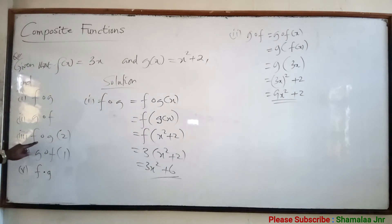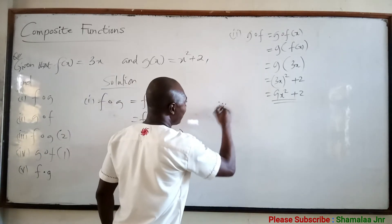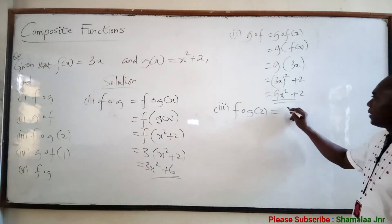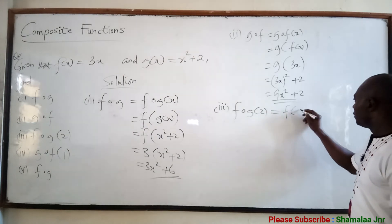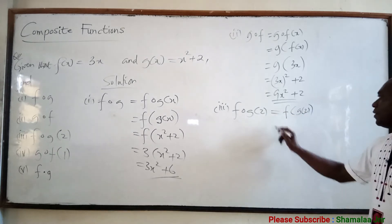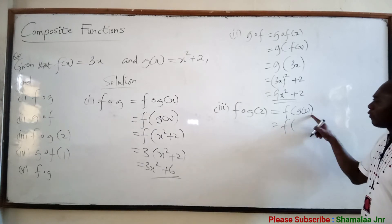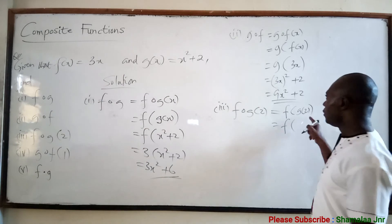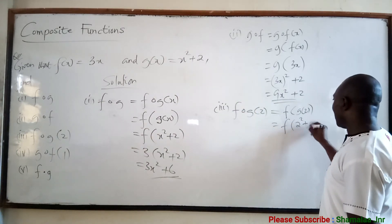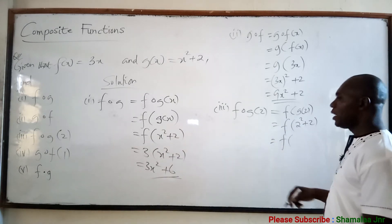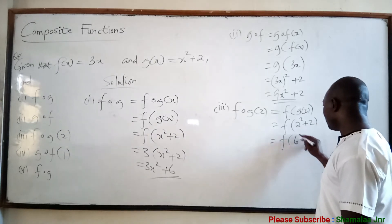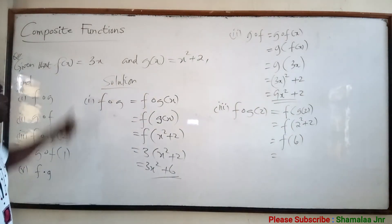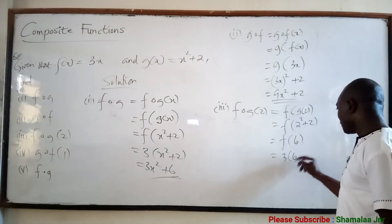Now we have to find f of g of 2. This is the same as f of g(2). This means first find g of 2 — go to the g function, wherever you see x put 2. So g(2) = 2 squared plus 2 = 4 plus 2 = 6. So this becomes f of 6. Then f(6) — go to f, wherever you see x write 6 — gives 3 times 6, which equals 18.